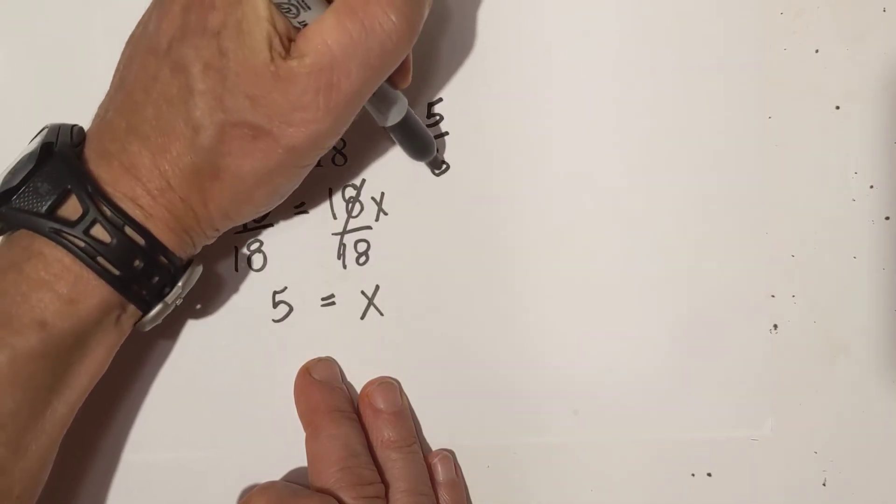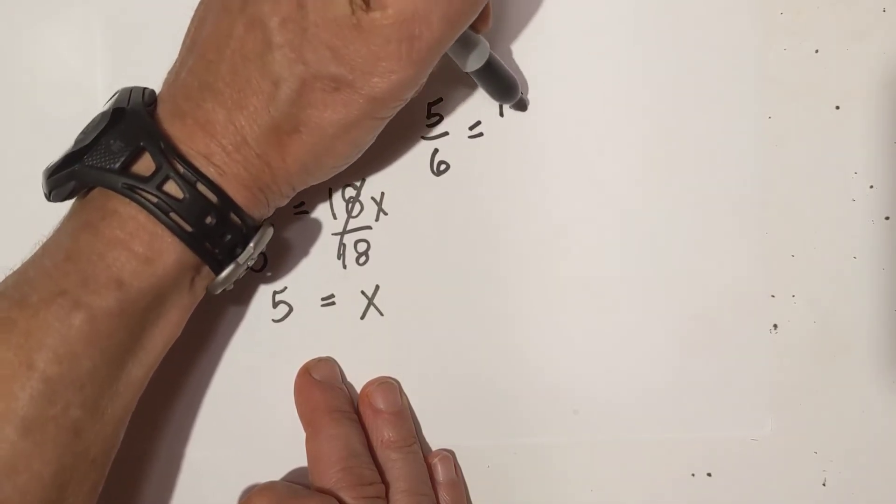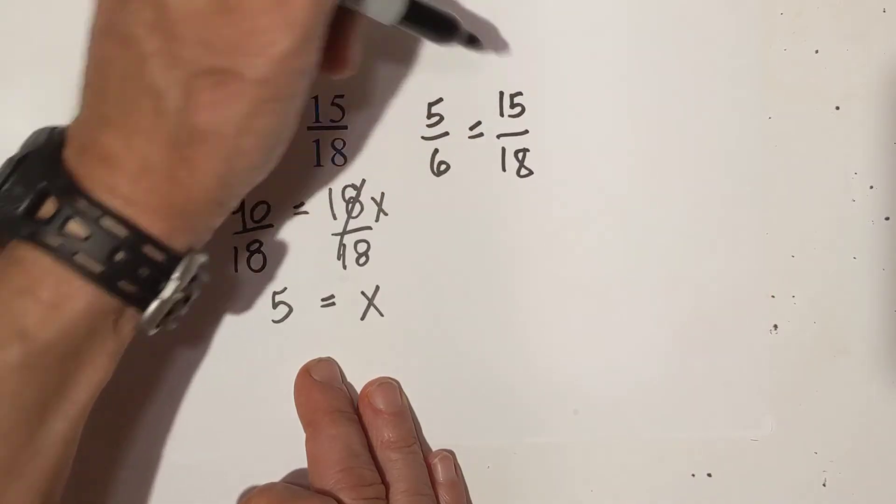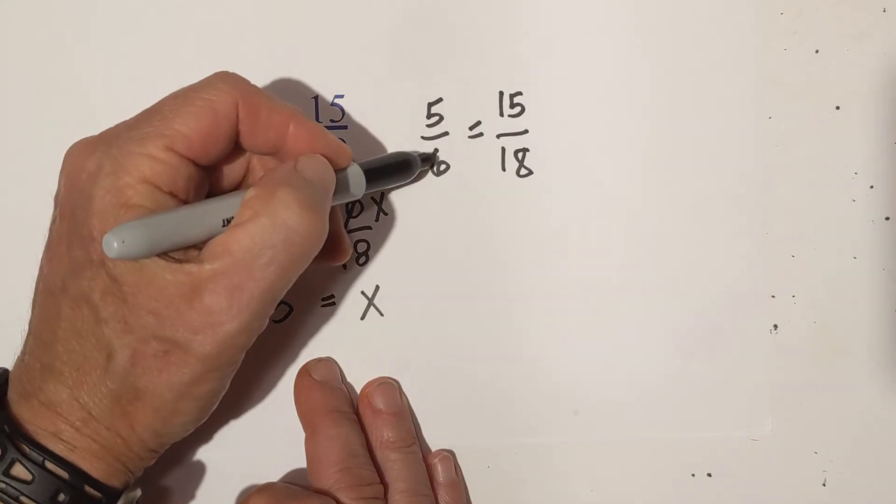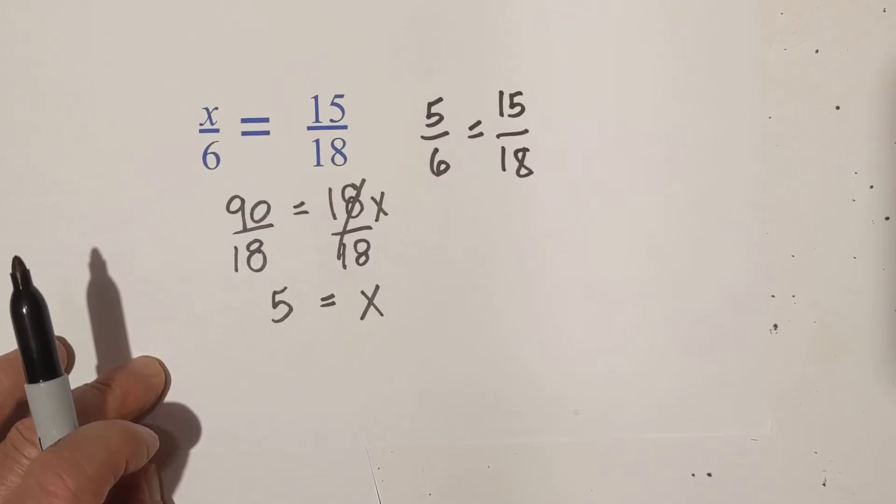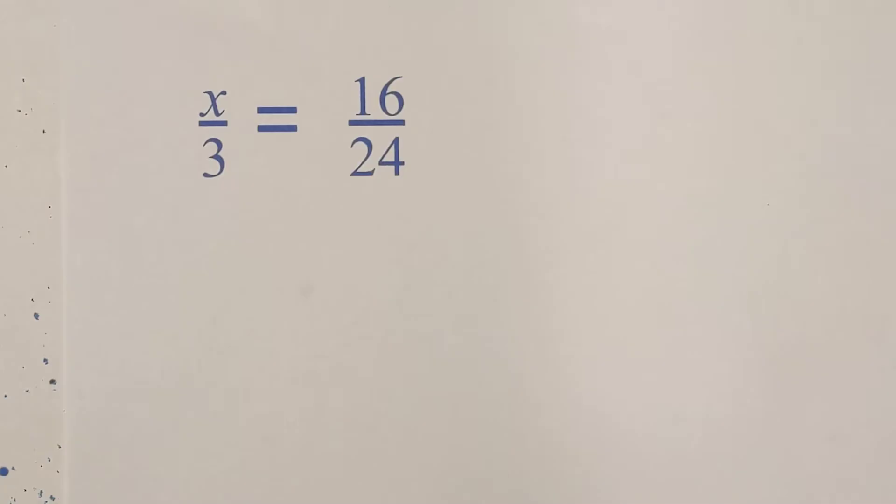Again, we're going to check. We have 5 sixths is equal to 15 eighteenths. 5 goes into 15 three times, and 6 times 3 is 18. So, so far so good. Let's work two more examples.